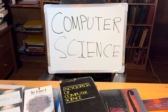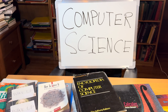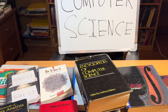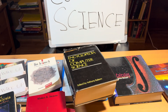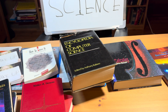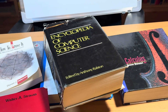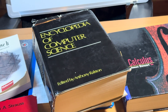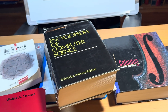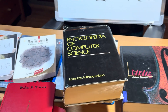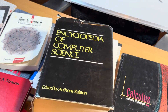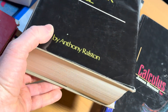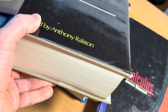Computer science is really cool, and I just wanted to make a random video to show you a super interesting book. We're going to take a look at this super thick book in this video. It's called Encyclopedia of Computer Science and it was edited by Anthony Ralston.